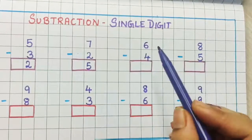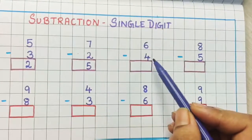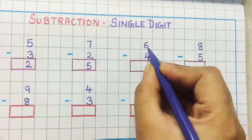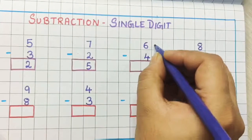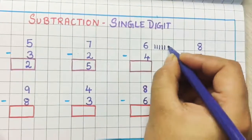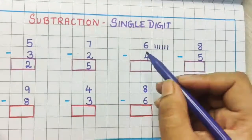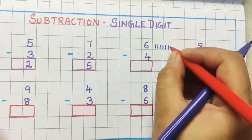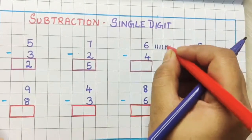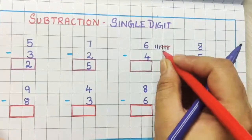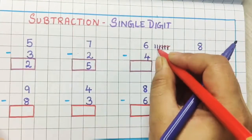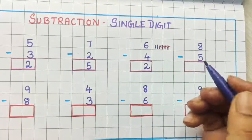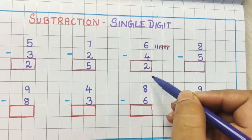Now the next problem is 6 minus 4. Let us understand this by drawing lines. Now 6 — imagine I have 6 sticks: 1, 2, 3, 4, 5, 6. Minus 4 means how many I am removing? 4. So let me cut out 4: 1, 2, 3 and 4. Now after cutting 4, how many sticks are left? 1 and 2 — 2 sticks are left. So the answer is 2. 6 minus 4 is 2.